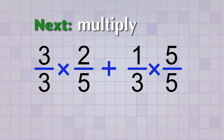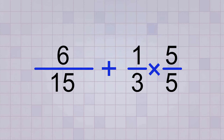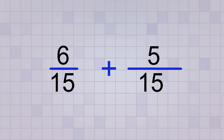Next, we multiply starting with our first fraction. On the top, 3 times 2 equals 6. And on the bottom, 3 times 5 equals 15. So our first fraction has become 6 over 15. Now for the second fraction: on the top, 1 times 5 equals 5. And on the bottom, 3 times 5 equals 15. So our second fraction has become 5 over 15.